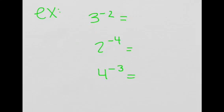Let's look at some examples. For 3 to the power of negative 2, according to the rule it would be 1 over 3 squared. This is equal to 1 over 9, or one ninth.